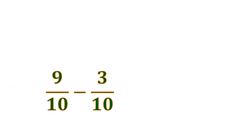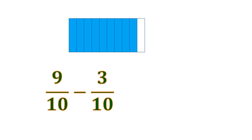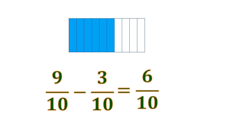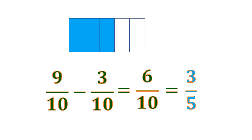Another example: we have 9 tenths minus 3 tenths. Let's visualize 9 tenths — we have 9 shaded parts out of 10, and we want to remove 3 shaded parts out of 10. What we have left is 6 tenths. And if we remove some slices, it's going to look like this — 6 tenths can be reduced into 3 fifths. The difference between 9 tenths and 3 tenths is 3 fifths.